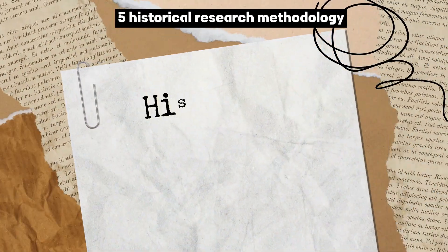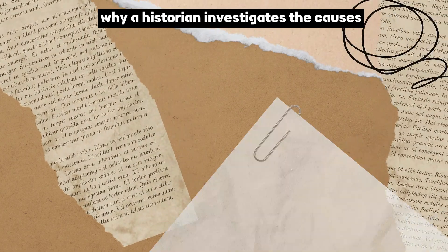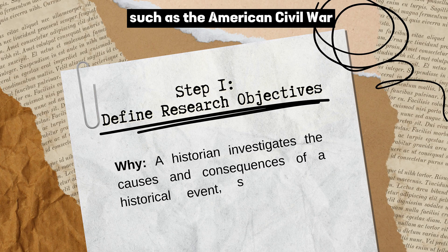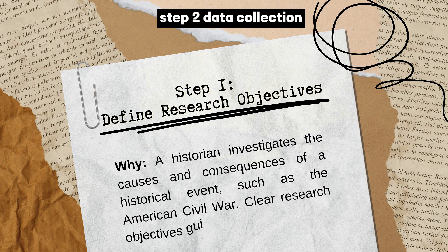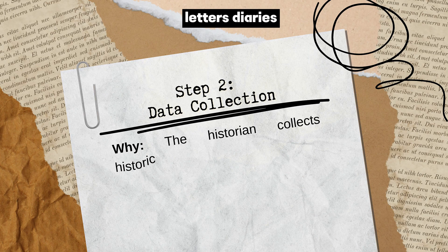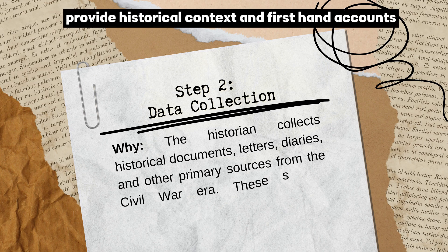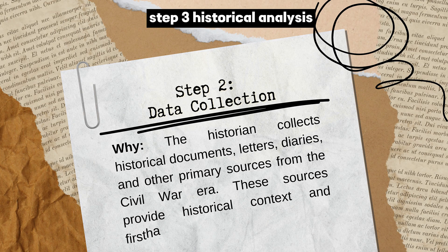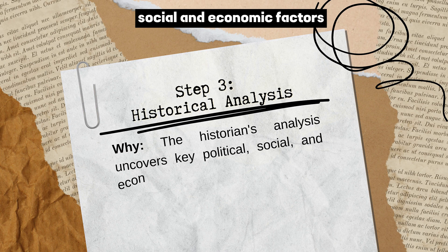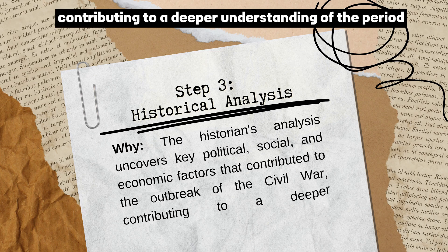Historical Research Methodology — Step 1: Define Research Objectives. A historian investigates the causes and consequences of a historical event, such as the American Civil War. Clear research objectives guide the study. Step 2: Data Collection. The historian collects historical documents, letters, diaries, and other primary sources from the Civil War era, which provide historical context and first-hand accounts. Step 3: Historical Analysis. The analysis uncovers key political, social, and economic factors that contributed to the outbreak of the Civil War, contributing to a deeper understanding of the period.